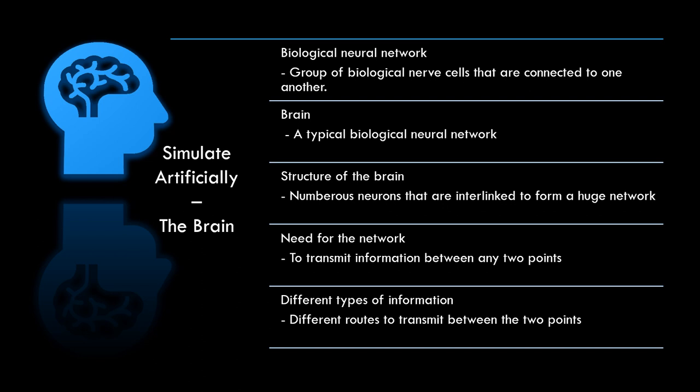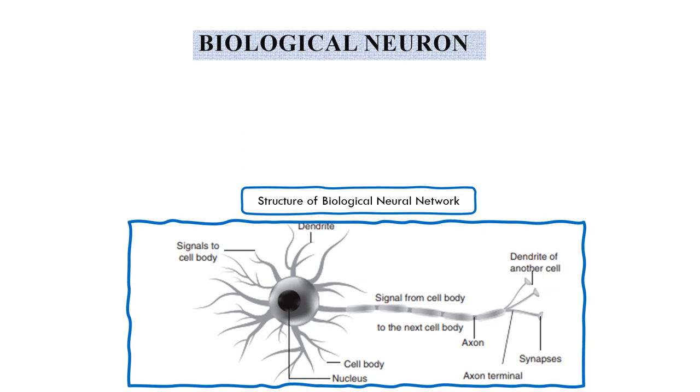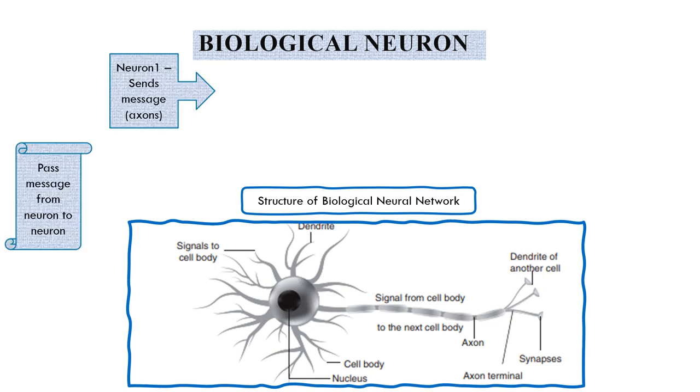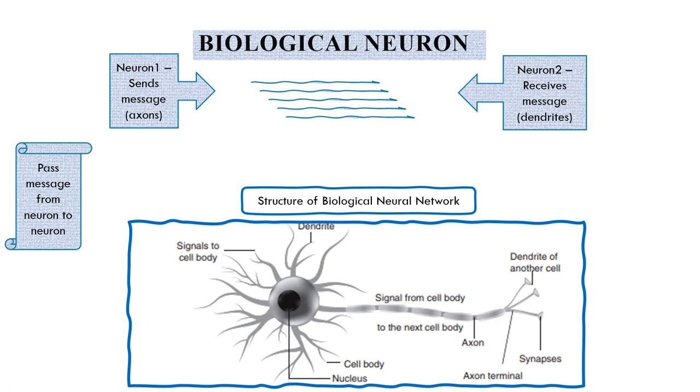The brain uses different routes to transmit different types of information between the two points. Let us assume a neuron wants to pass message to another neuron. The source neuron sends message through axons as electrical signals. These are received by the dendrites of the receiving neuron and are processed.